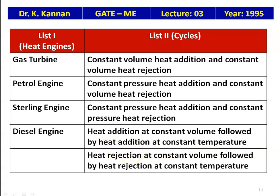Match the following thermodynamic cycles: Gas turbine — constant pressure heat addition, constant pressure heat rejection (Brayton cycle). Petrol engine — constant volume heat addition, constant volume heat rejection (Otto cycle). Diesel engine — constant pressure heat addition, constant volume heat rejection. Sterling engine — heat addition at constant volume followed by heat addition at constant temperature.